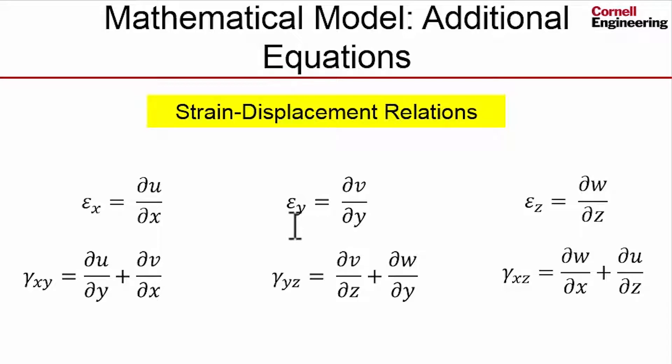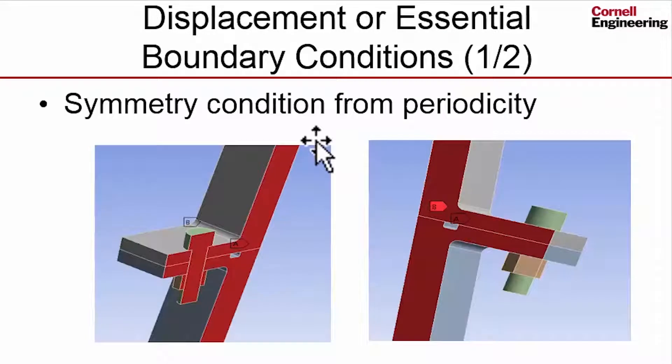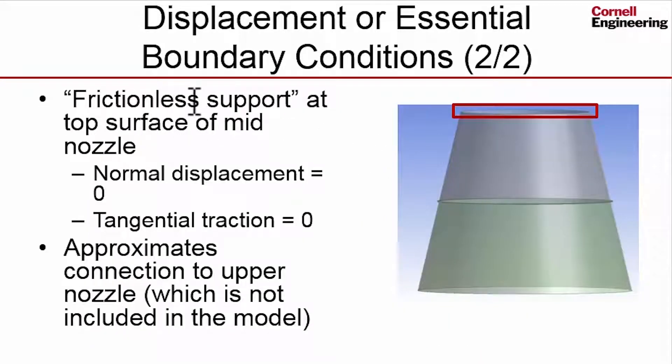And we'll go to the essential boundary conditions first. The first essential boundary condition is the symmetric condition from periodicity, and then we have the frictionless support at the top. So let's go and take a look at the essential boundary conditions and apply what we need to.